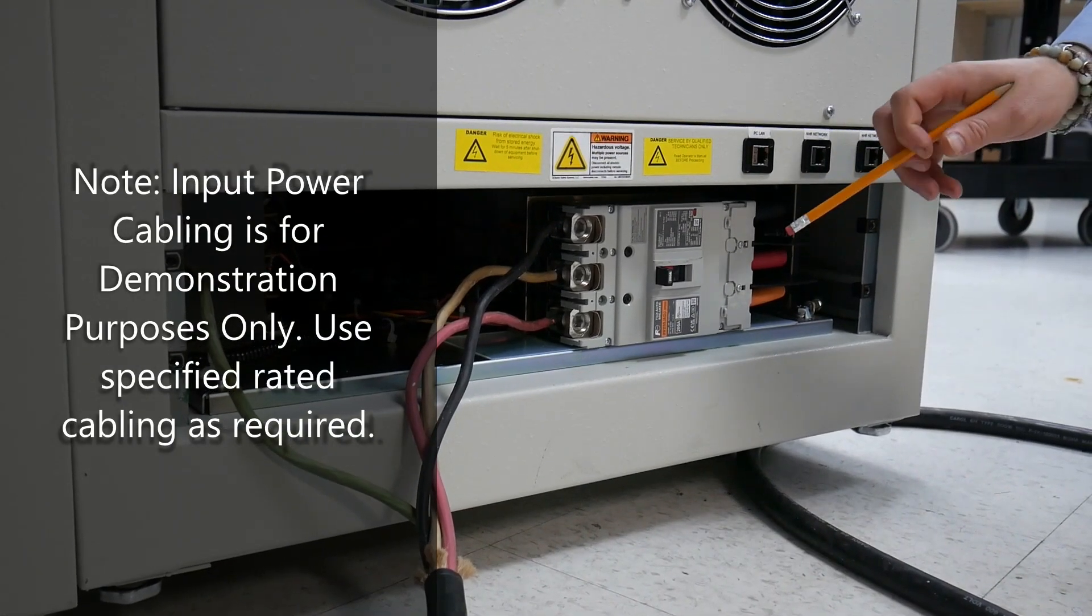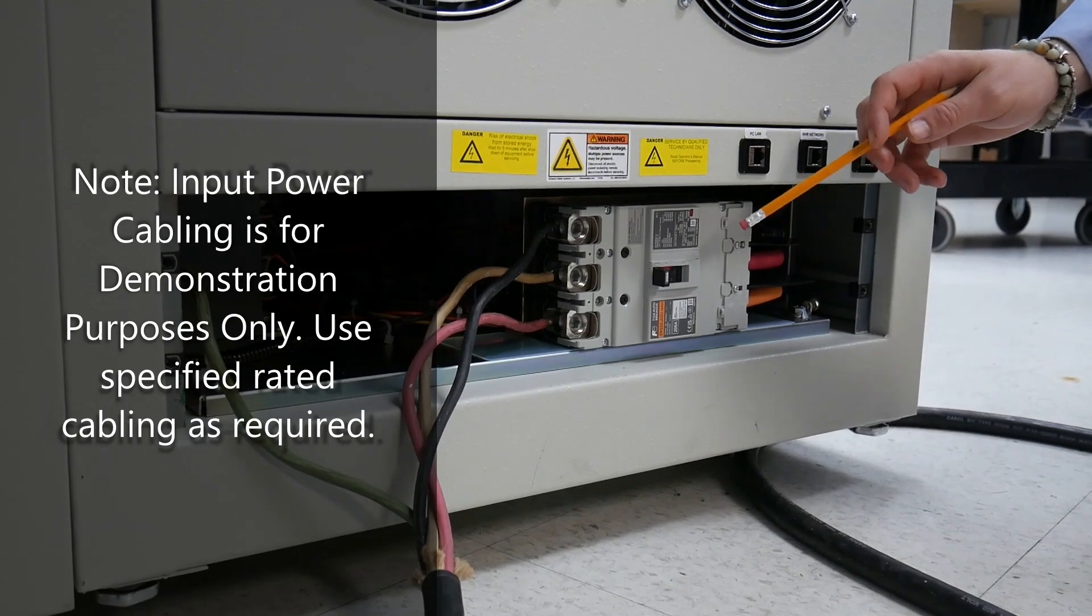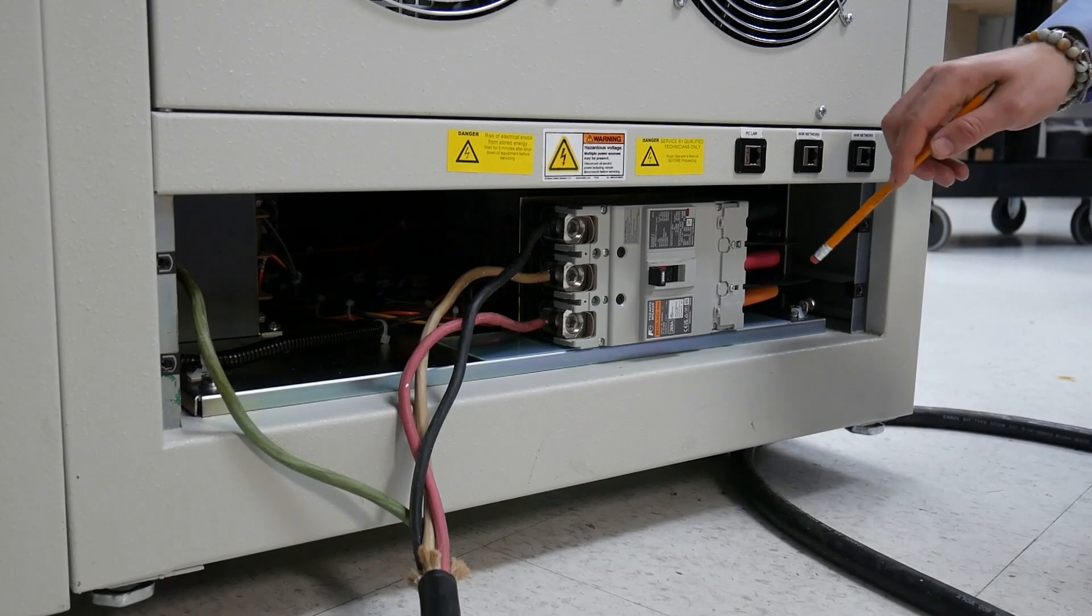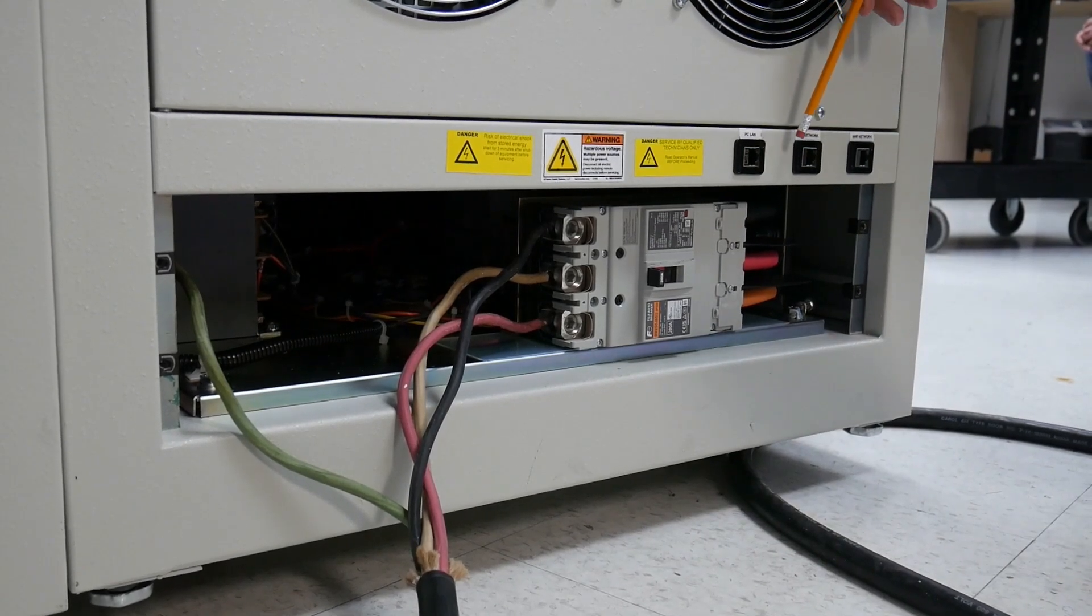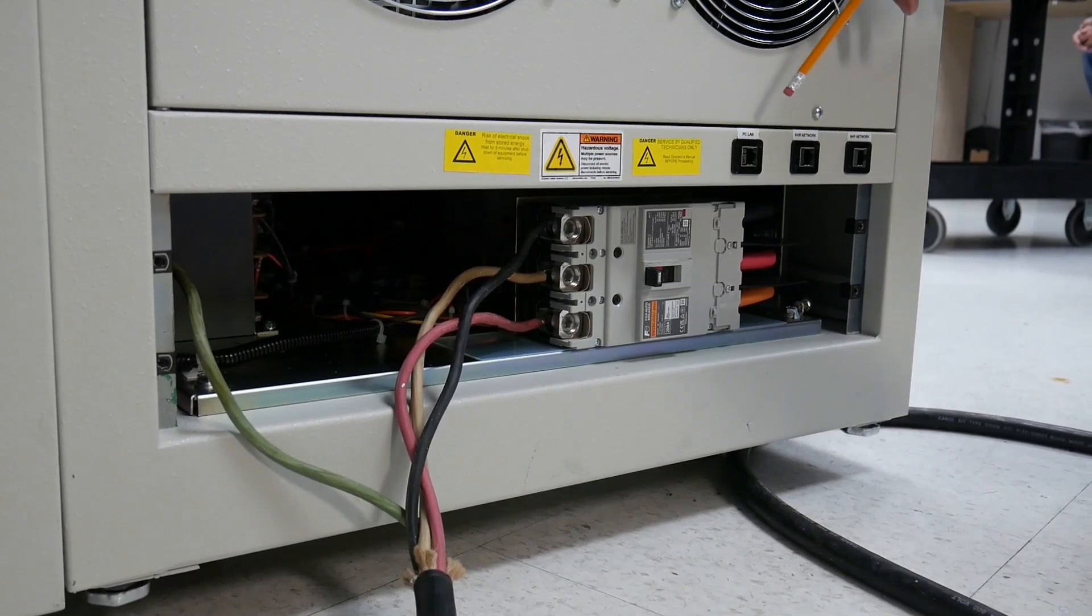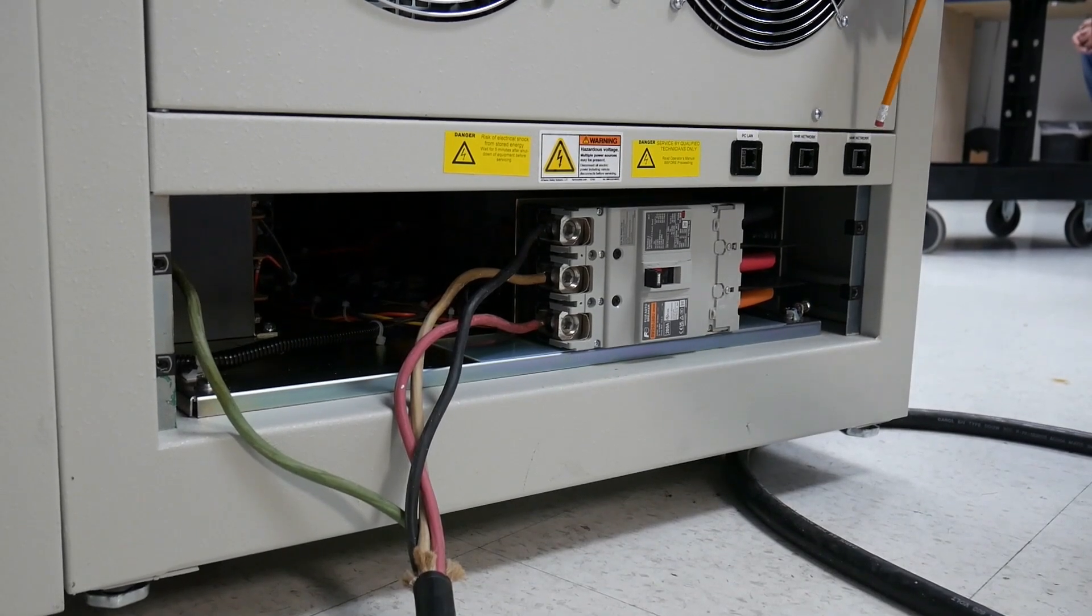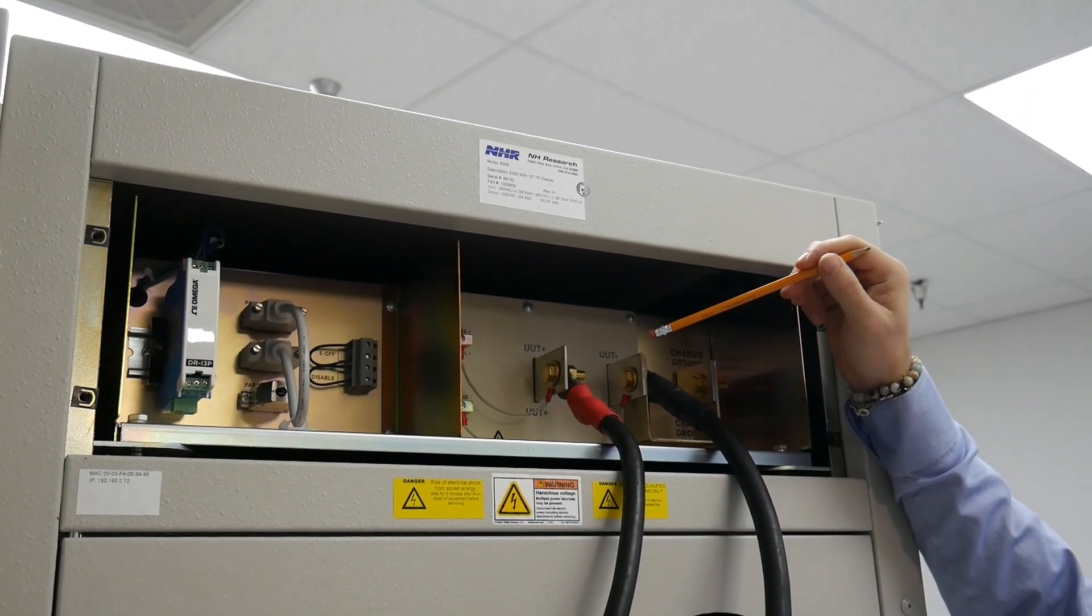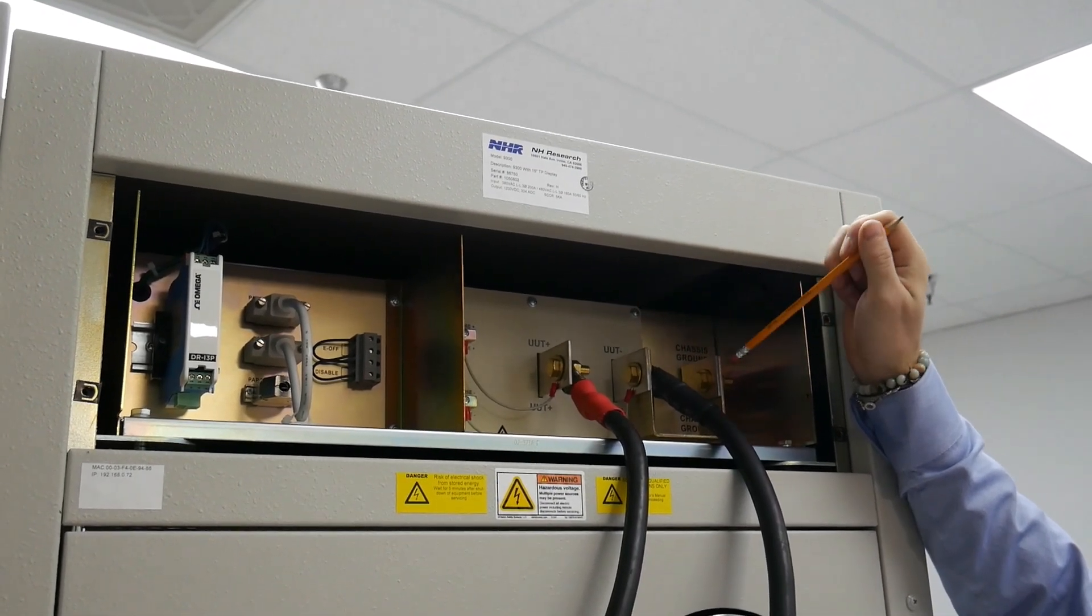Your first step is to come over to the back of the unit. Below you have your AC three-phase input connections as well as your ethernet communication ports to parallel the units and plug them into your software. At the top you have your DC UUT output ports.